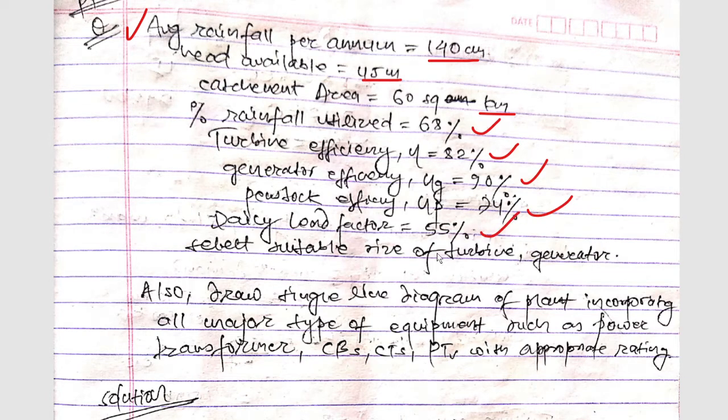And select suitable size of turbine and generators and also draw single line diagram for plant incorporating all major type of equipment such as power transformers, circuit breakers, potential transformers with appropriate ratings.